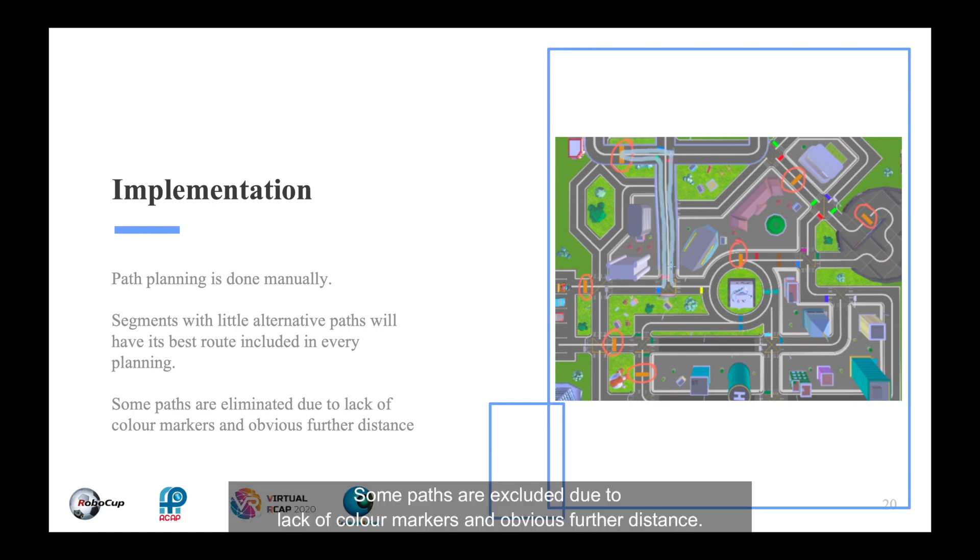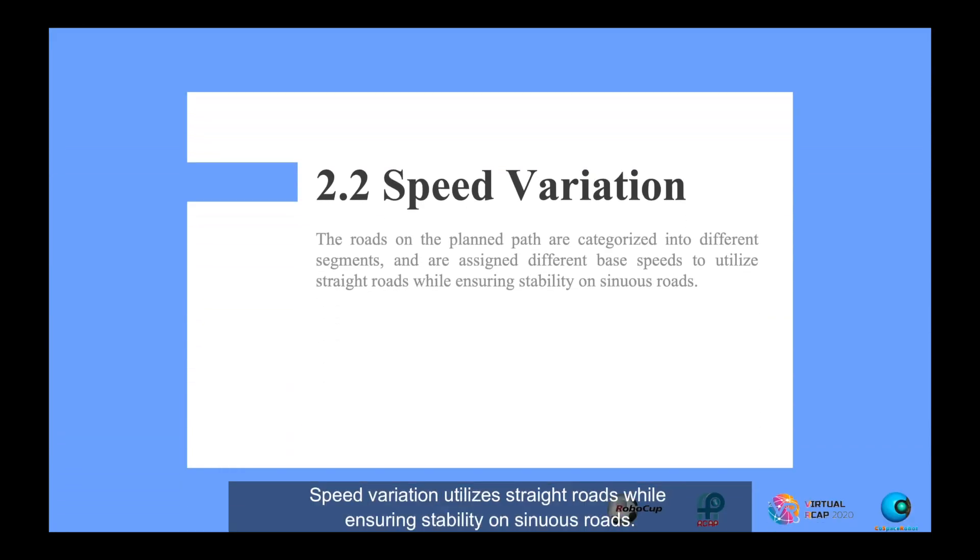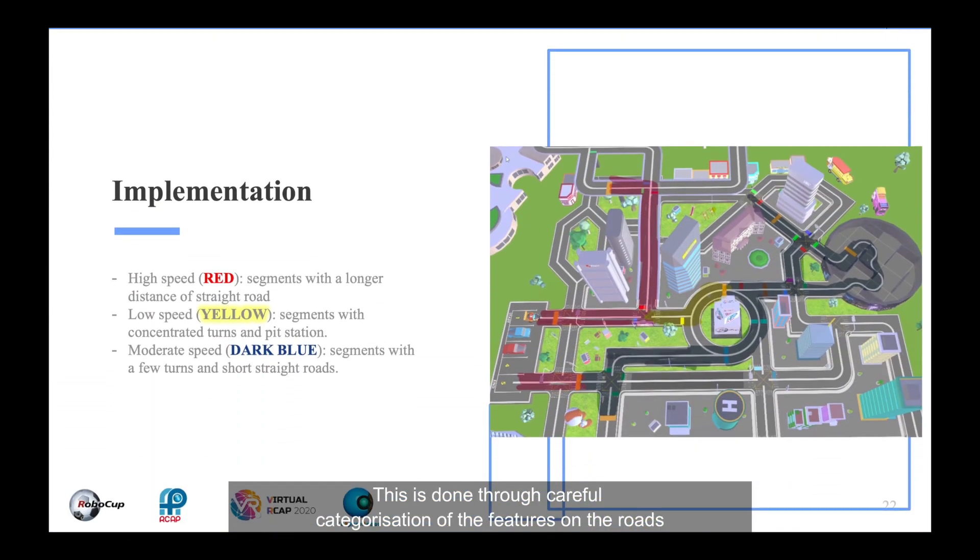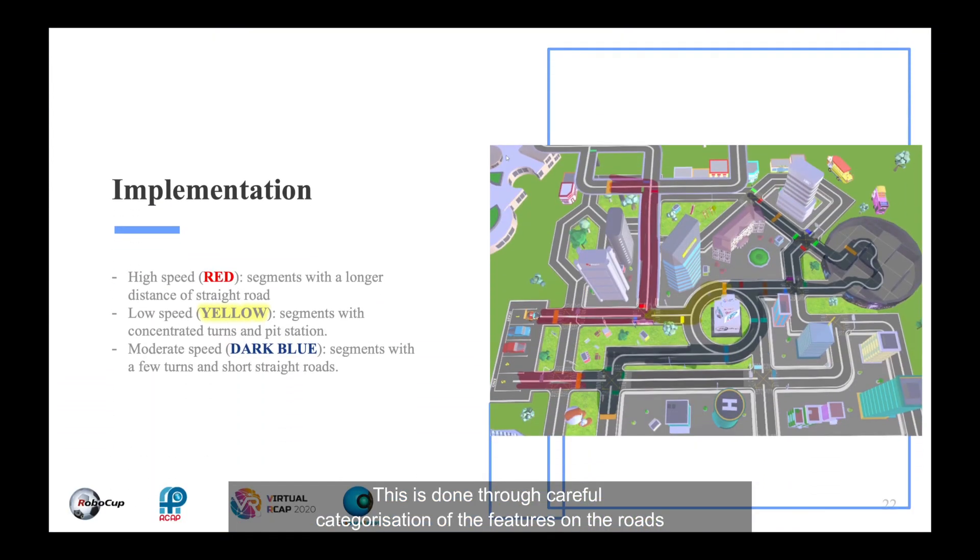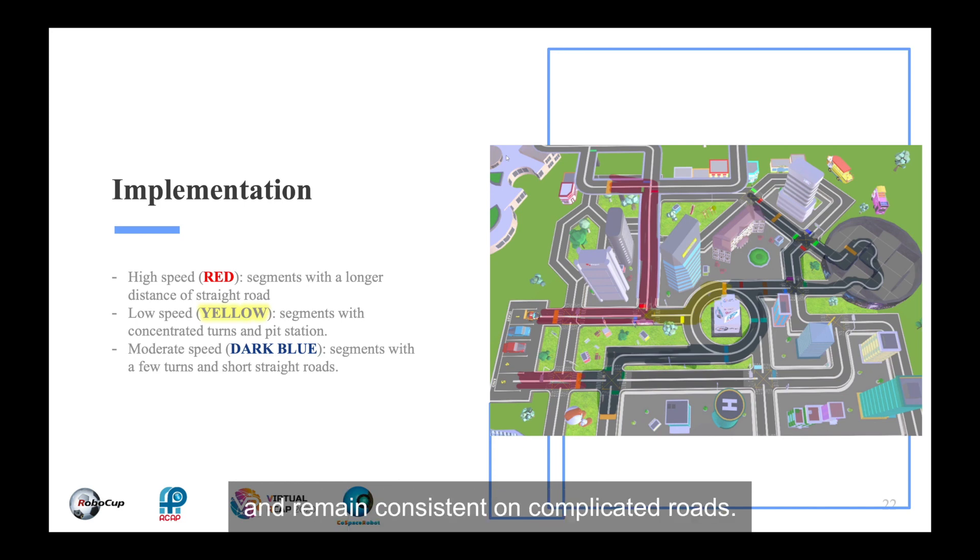Some paths are excluded due to the lack of colour markers and obvious further distance. Speed variation utilizes straight roads while ensuring stability on sinuous roads. This is done through careful categorization of the features on the roads. By having different speeds for different sections, the robot can run faster when the situation permits and remain consistent in complicated segments.